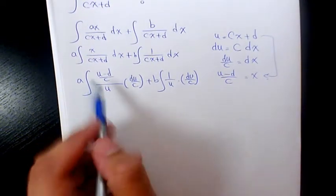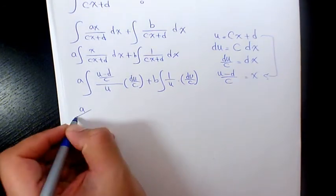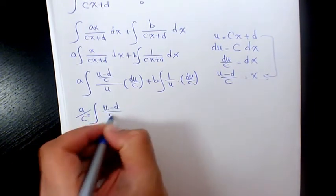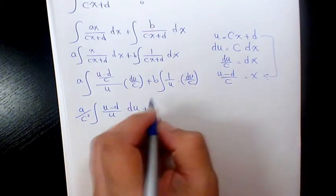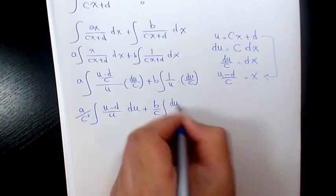Then what you can do is take the c and c out. It's going to be a over c squared times u minus d over u du, plus b over c times du over u.